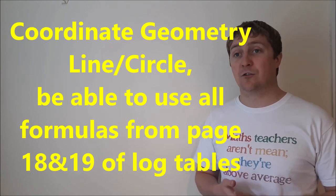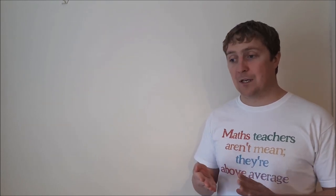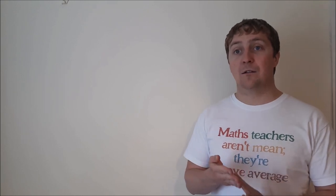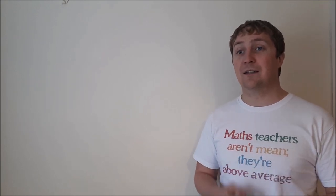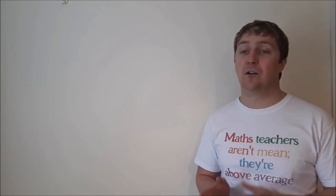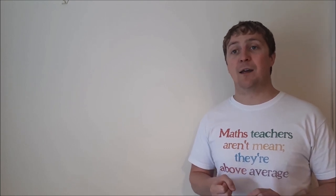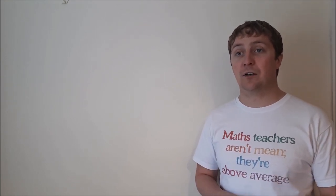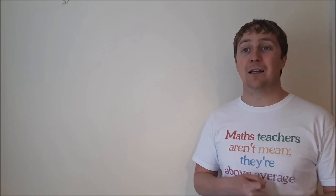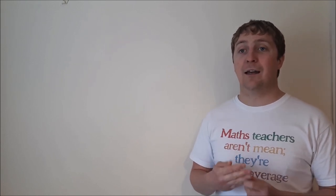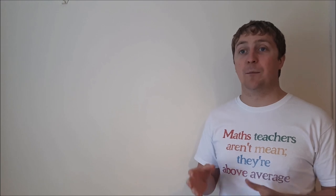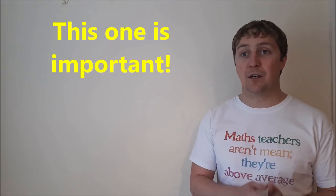And you have the equation of a circle in different forms: so if the center is at zero zero, if the center is somewhere else, you have the general equation of a circle. You need to be able to solve for a tangent to the circle and a line intersecting a circle, your tangent to a circle.